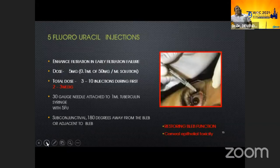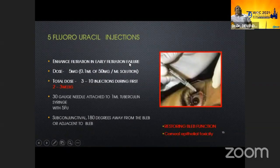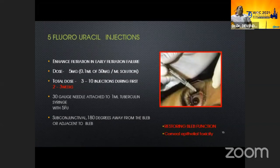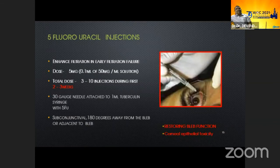Coming to 5-fluorouracil: it helps in reviving or restoring bleb function and enhances filtration in early post-operative failure. Total dose is 5 mg; 0.1 ml of 50 mg/ml concentration can be given. Usually 3 to 10 injections can be given within the first 2 to 3 weeks, using a 30-gauge needle. Previously most surgeons gave it 180 degrees away from the limbus, but recently most surgeons inject 5-FU adjacent to or above the bleb. Keep in mind that 5-FU is highly epitheliotoxic, so avoid any spill during injection.